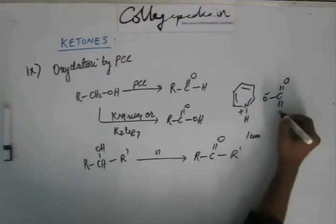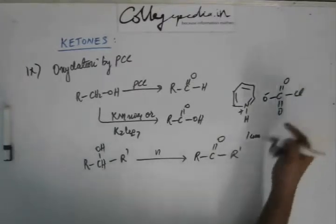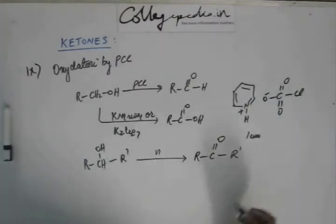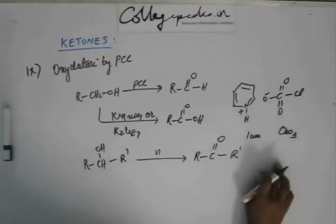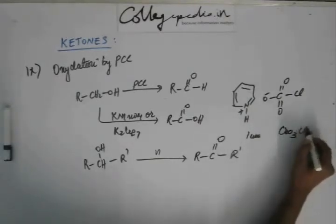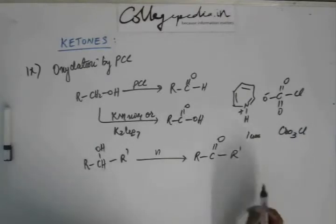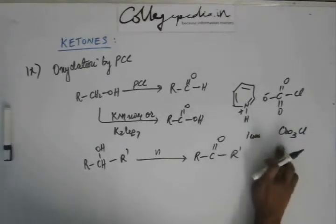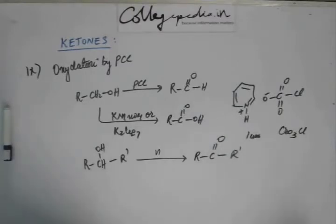Chlorochromate is this. This is chlorochromate, chromate is CrO3, chlorochromate is CrO3Cl. Like this, it has one unit of negative charge, pyridinium has one unit of positive charge.